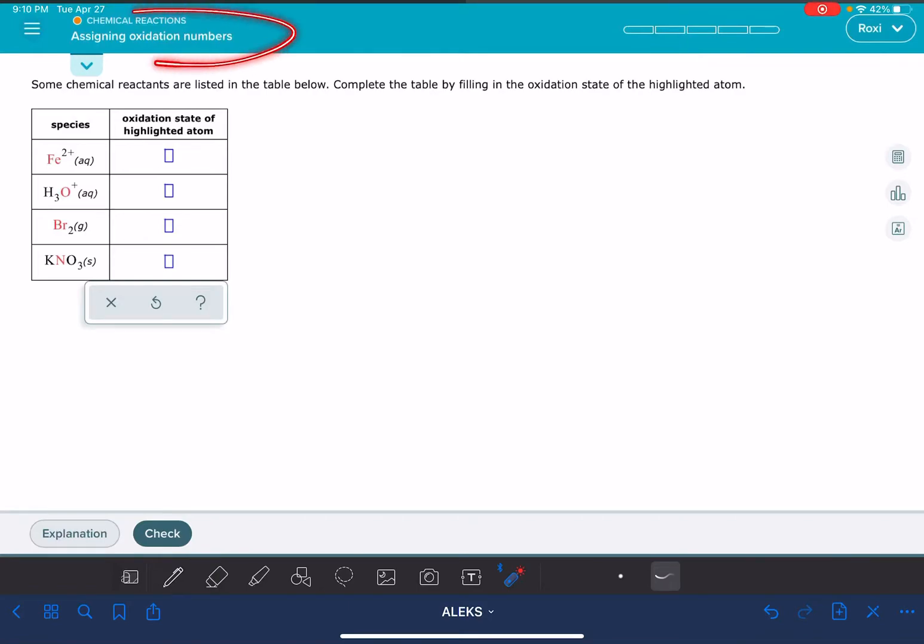In this video, I'm going to walk you through the Alex problem, assigning oxidation numbers. A couple of things to keep in mind before we get started. The oxidation number of an oxygen atom is almost always minus two. For hydrogen atoms, the oxidation number is almost always a plus one.